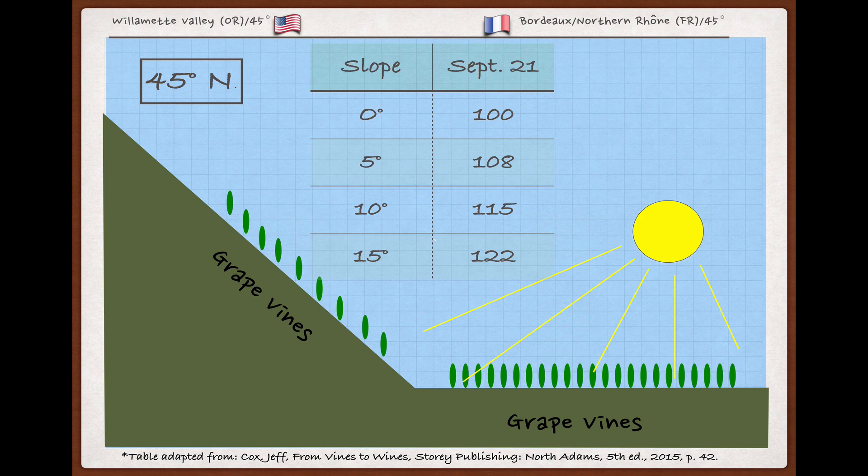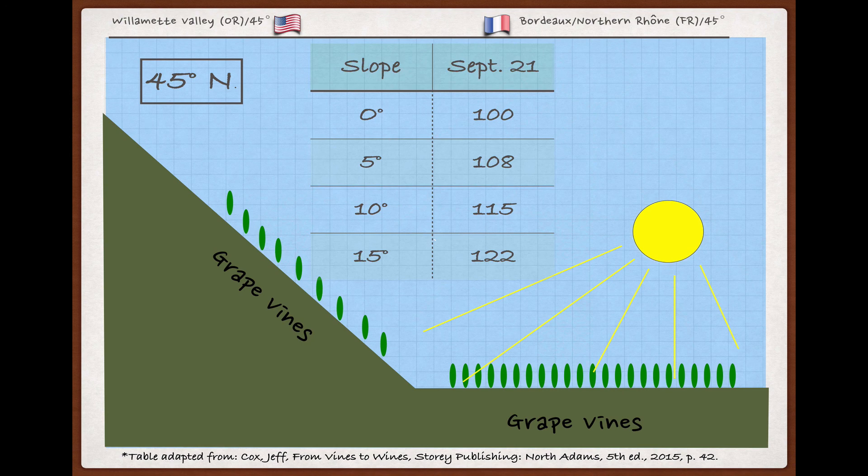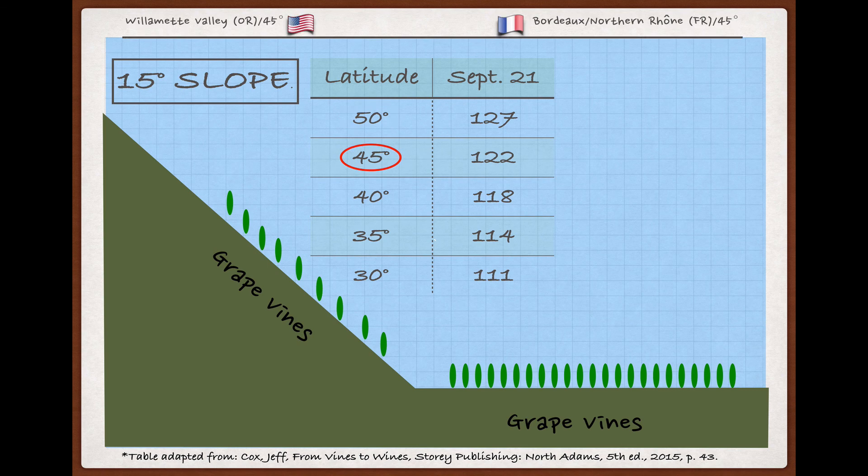All of this is complicated by the fact that any slope will make a bigger difference the higher the latitude. So if we head up to 50 degrees north, or south if we were in the southern hemisphere, where roughly Canada's Okanagan Valley and Germany's Mosul are, a 15-degree slope will result in more concentration of heat energy than it would have at 45 degrees, home to the Willamette Valley as well as Bordeaux and the northern Rhone.